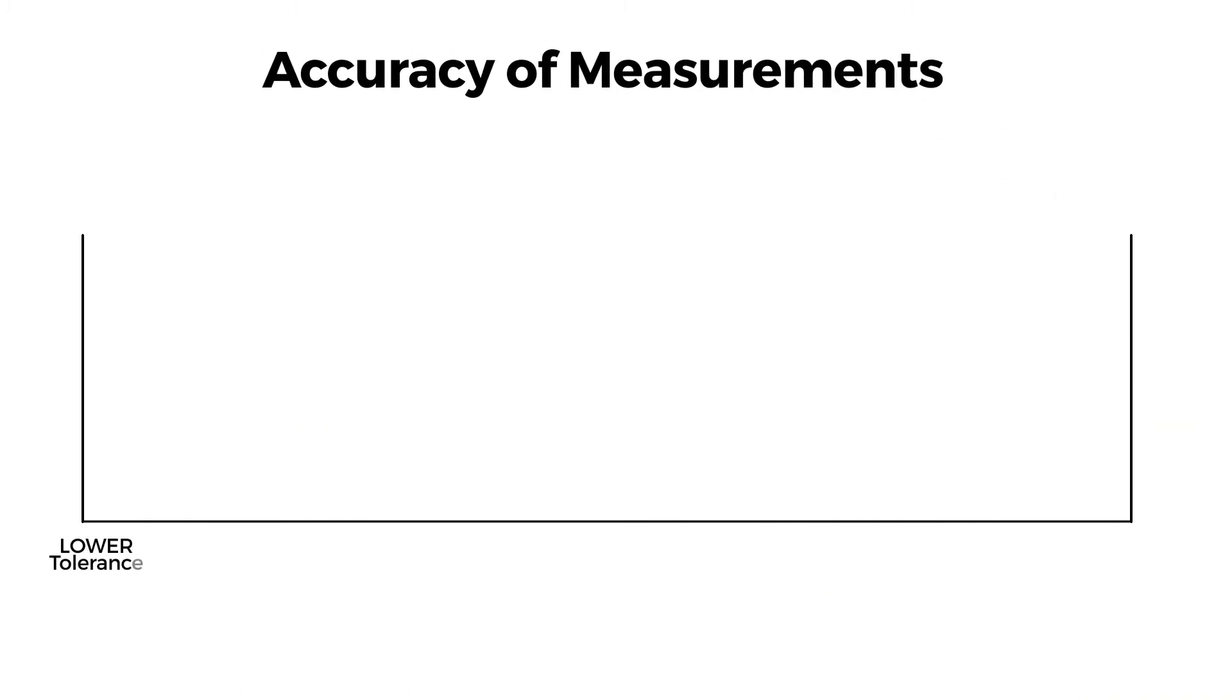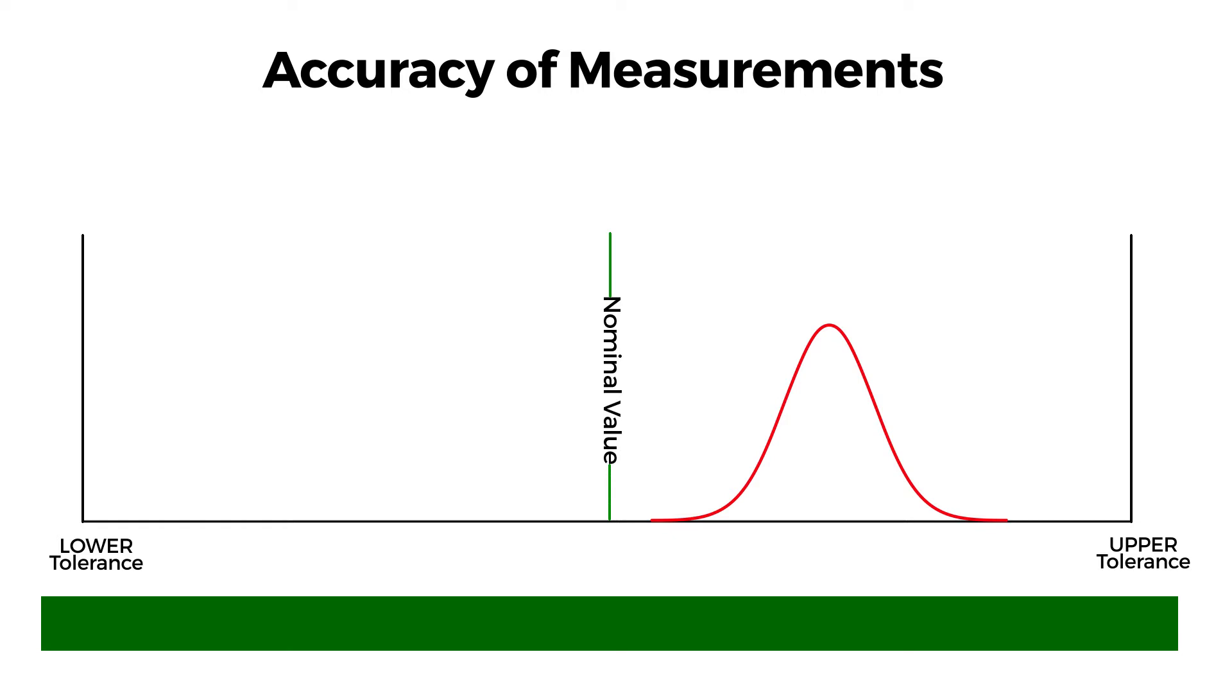The accuracy of measurements can be shown on a graph. First, we label the specification limits and the nominal value of the measurement. Then a distribution curve is generated from the repeatable measurements using the same procedure, operators, system, operating conditions, and location.